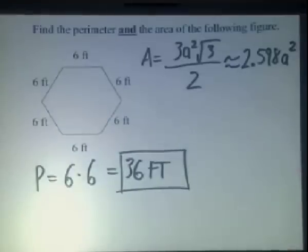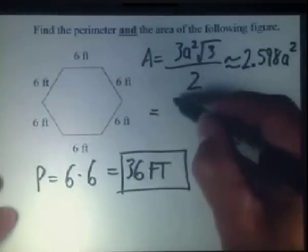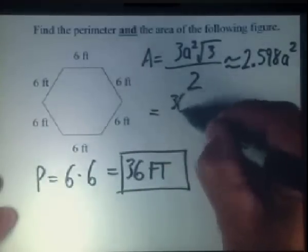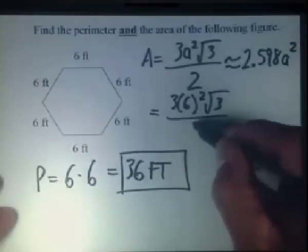That's a little bit more straightforward than determining the area. Area in this case is given by the above formula. A being one of the 6 equal sides, we have 3 times 6 squared, square root of 3, all over 2.